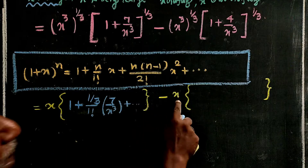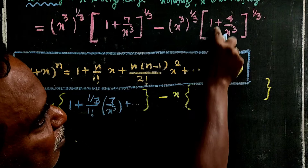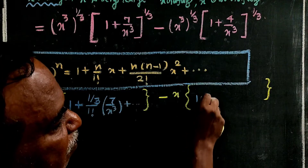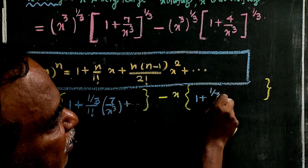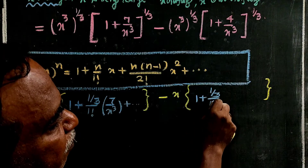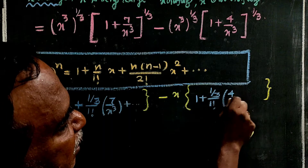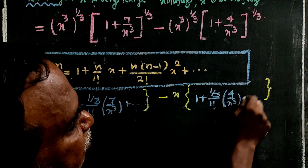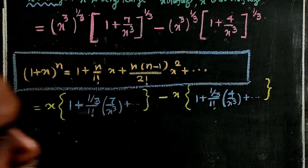Minus x times [1 + (1/3) · (4/x³) + etc.] for the second term.